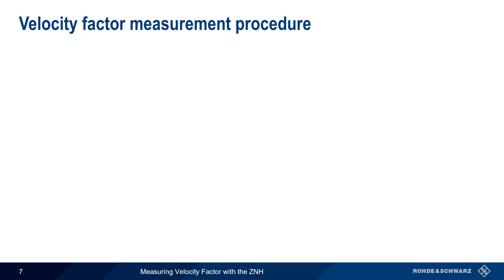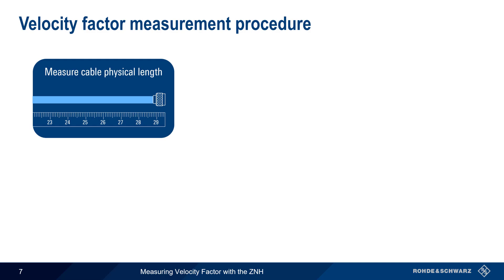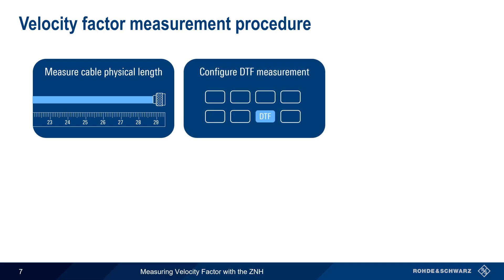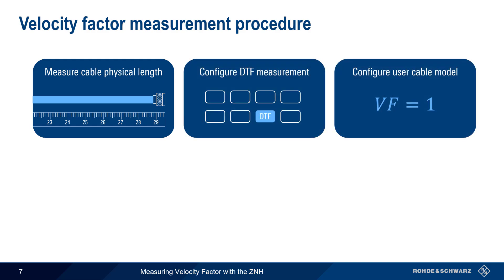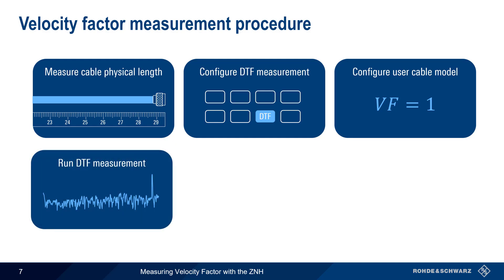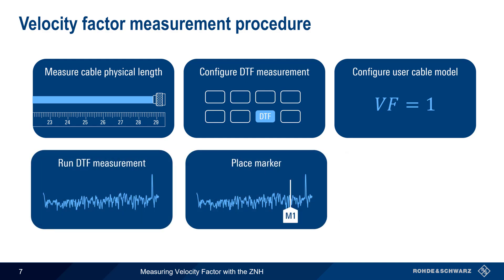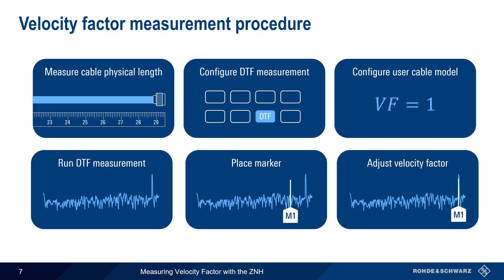The steps in our procedure, therefore, are: measuring the cable physical length, configuring the DTF measurement, creating a user cable model, running the DTF measurement, placing the marker, and adjusting velocity factor. In the remainder of this presentation, we'll provide a detailed explanation of how to perform each of these steps using the ZNH.